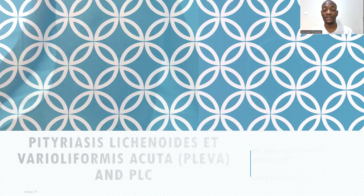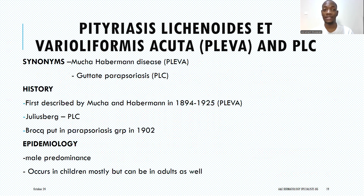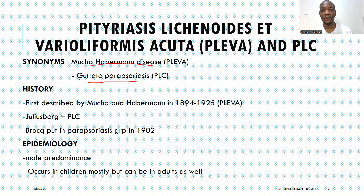Today we shall look at these conditions and see the difference. We shall start with pityriasis lichenoides et varioliformis acuta — PLEVA — which is also called Mucha-Habermann disease. PLC is also called guttate parapsoriasis in some literature. These synonyms are very key for you to remember, because someone can refer to Mucha-Habermann disease and you may not realize it is PLEVA. PLEVA is very interesting because the name itself gives the entire description of the condition.